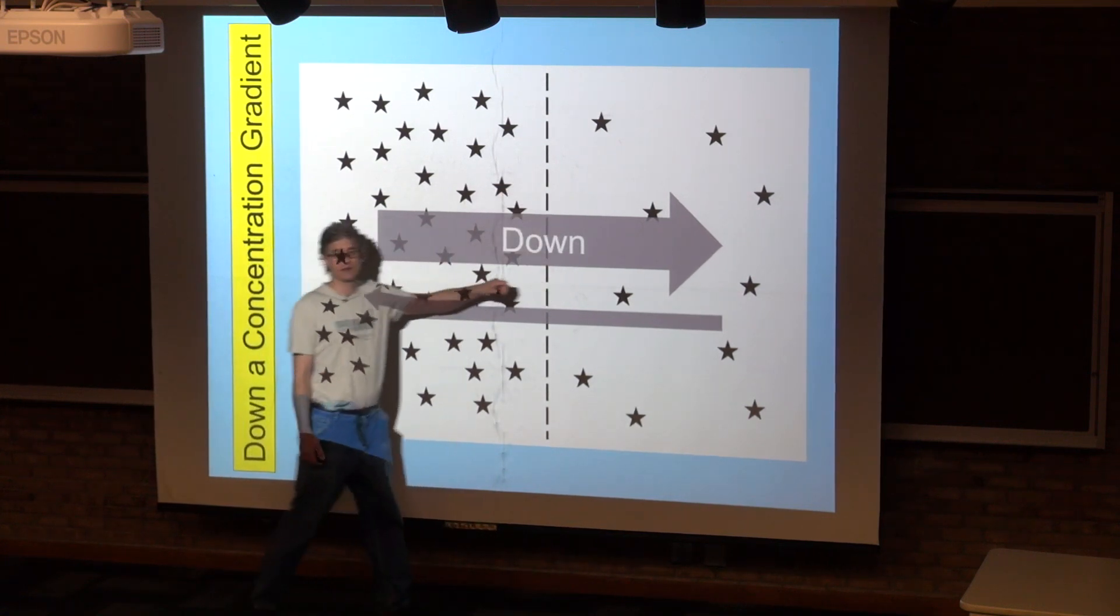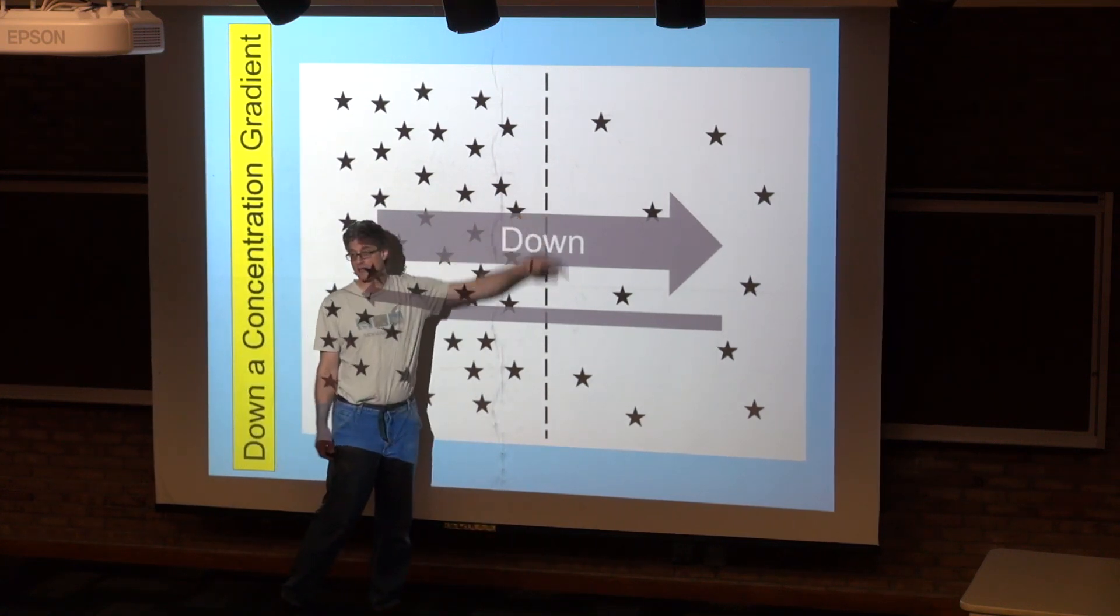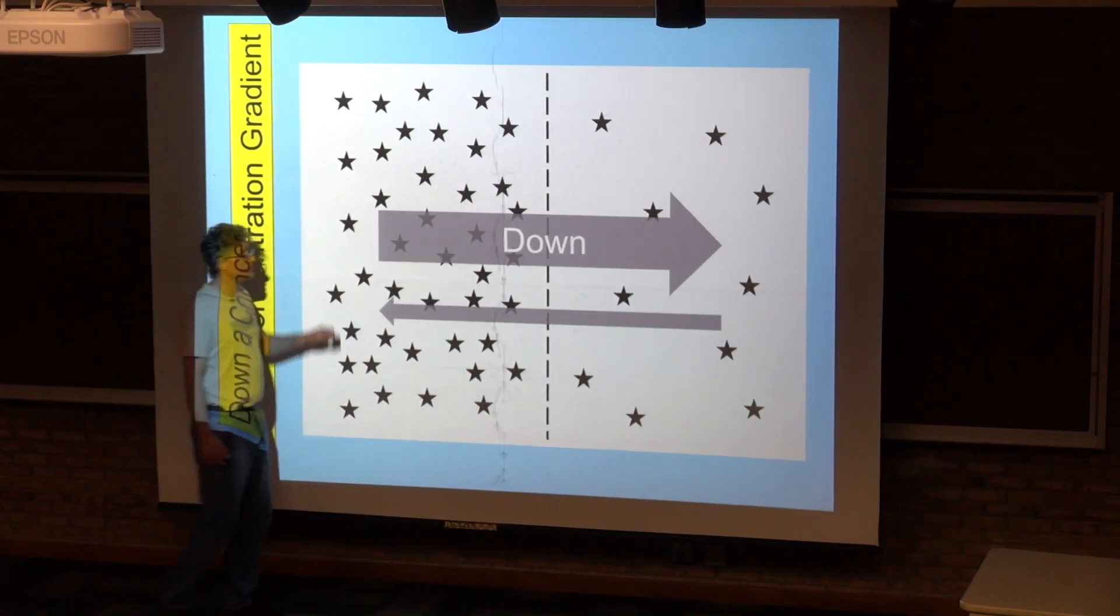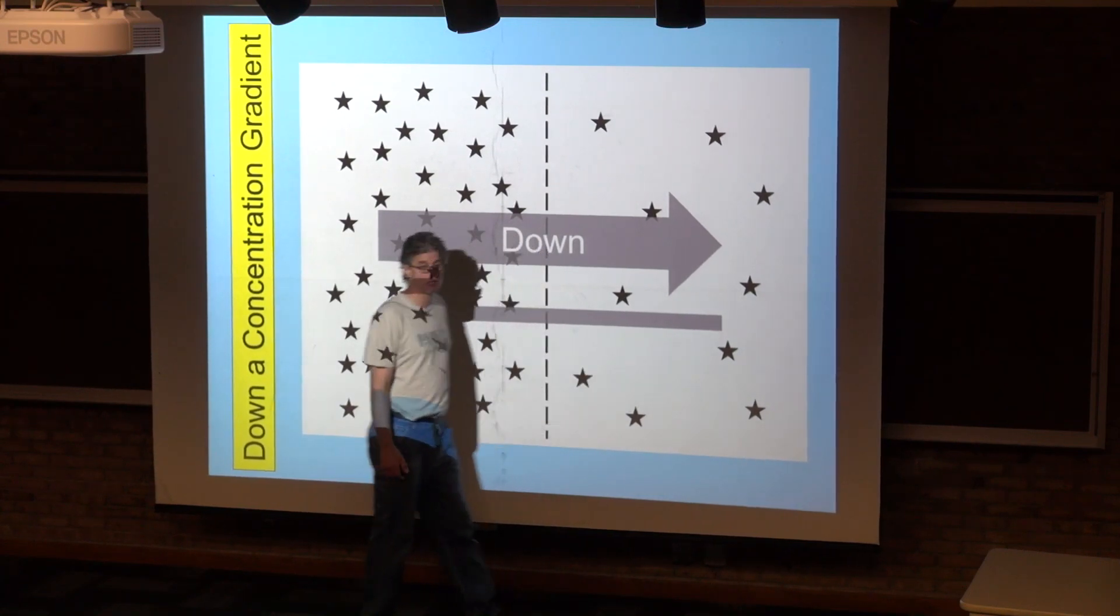This is a membrane, doesn't even have to be a lipid bilayer, just some kind of membrane. Here we have a region of high concentration. Here we have a region of low concentration.